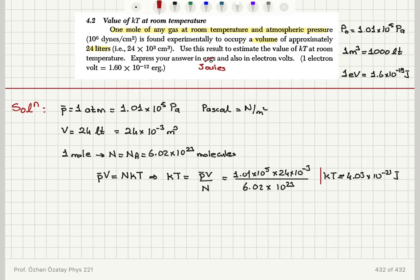So this gives us a KT value of 4.03 times 10 to minus 21 joules. So this is using SI system. In CGS system, the unit of energy is ergs and 1 joule is equal to 10 to 7 ergs. So 1 electron volt is 1.6 times 10 to minus 12 ergs, which means 1.6 times 10 to minus 19 joules. So that's just extra information for you, conversion between CGS and SI units.